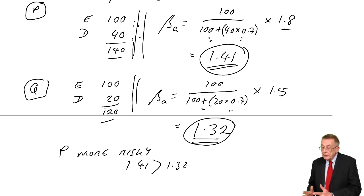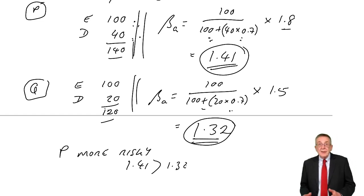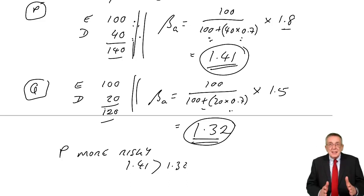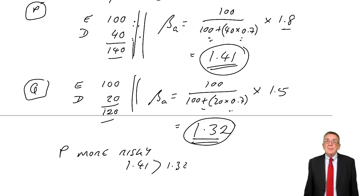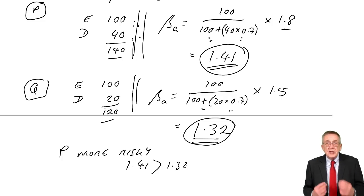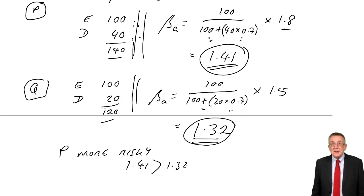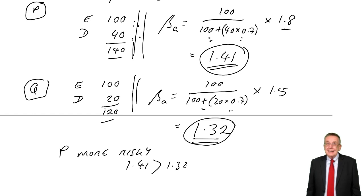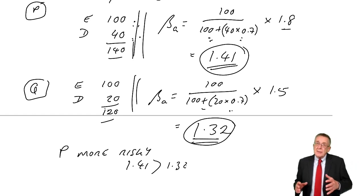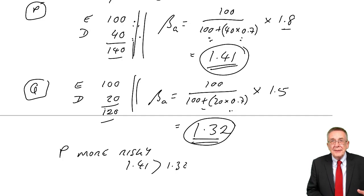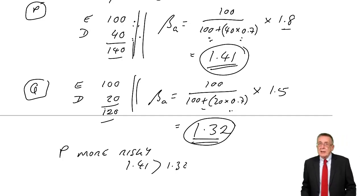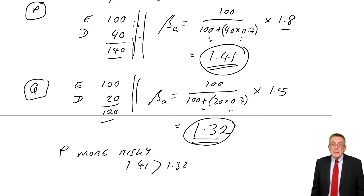Appreciate not just the arithmetic — the arithmetic isn't too bad — but appreciate the significance. It's the beta of the shares that is normally published; betas are always betas of shares unless you're told differently. But one of the reasons the beta is as high as it is, is because of gearing. If we want a measure of the riskiness of the business itself, we need to take out the gearing effect — we call that the asset beta.